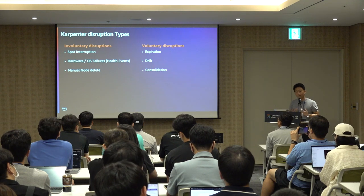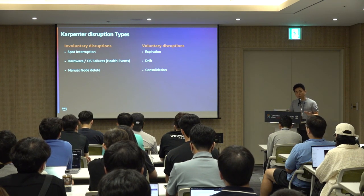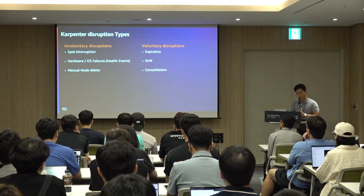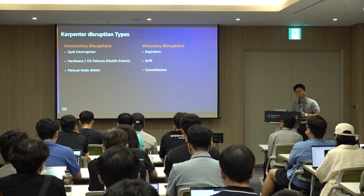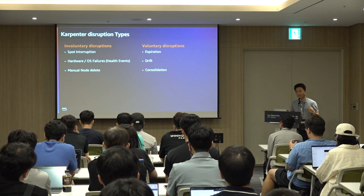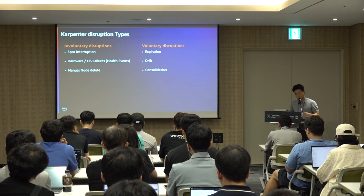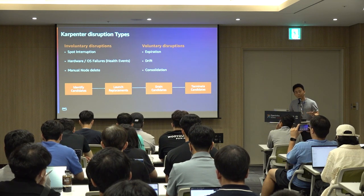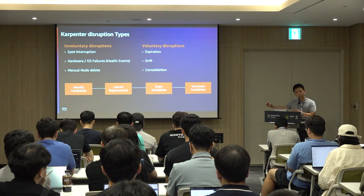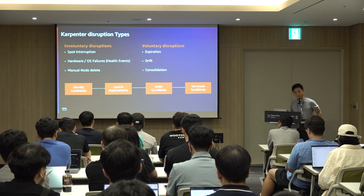You can control when disruptions happen. There are involuntary disruptions you cannot control — like spot termination, which gives two minutes notice but cannot be stopped — and voluntary disruptions like expiration, consolidation, and drift. Karpenter has a built-in termination handler that tries to evacuate pods by draining them, launching a replacement node first, then draining and terminating the worker node. Spot termination handling can be enabled from the Karpenter deployment.